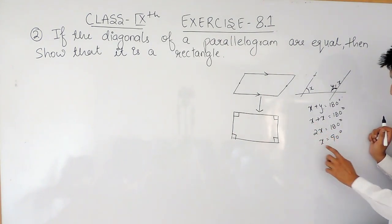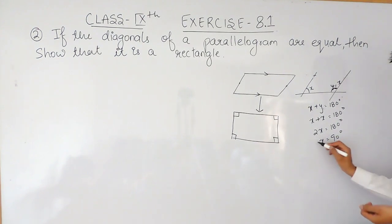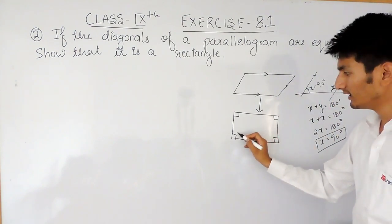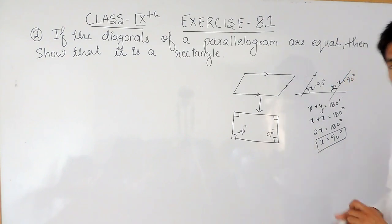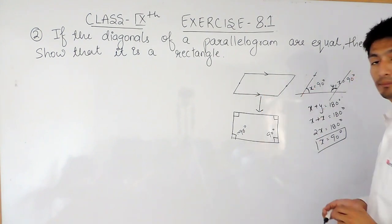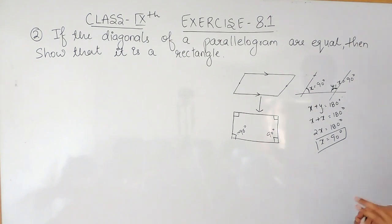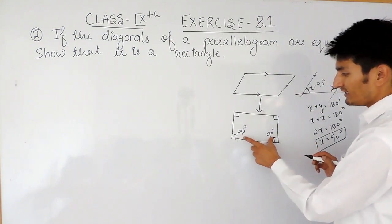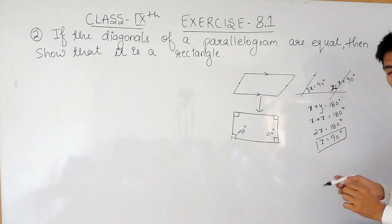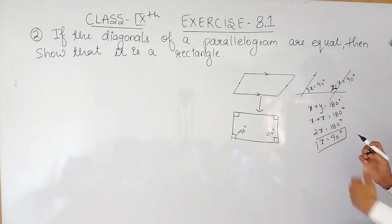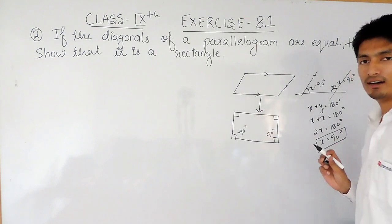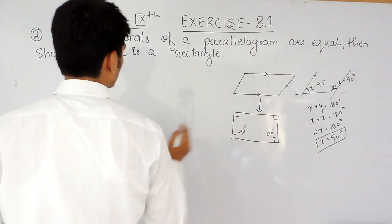So this angle equals 90 degrees, and this one also equals 90 degrees. This is how you can prove the angles are 90 degrees and the figure is a rectangle. The main task is to prove that these two angles — angle A and angle B — are equal. Once both angles are equal, using the co-interior angles property you can prove each angle is 90 degrees, and we know that a parallelogram with one angle equal to 90 degrees is a rectangle.